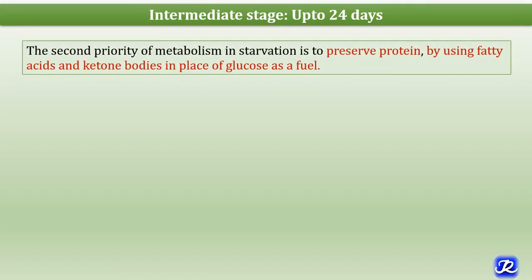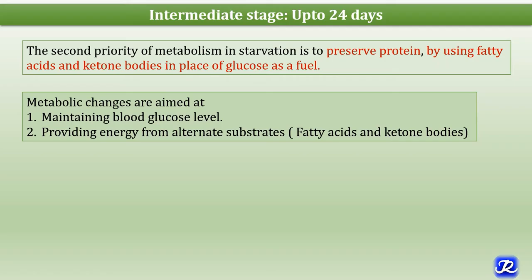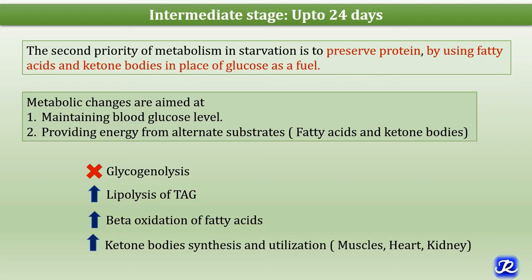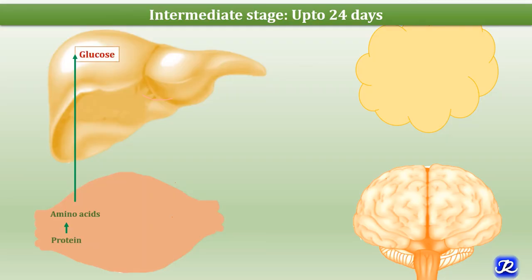In the intermediate stage, lasting from 48 hours (2 days) to 24 days, the priority of metabolism is to preserve protein by using fatty acids and ketone bodies in place of glucose as fuel. Metabolic changes aim to maintain blood glucose levels and provide energy from alternate sources. There is no glycogenolysis; instead, there is increased lipolysis, increased beta-oxidation of fatty acids, and increased ketone body synthesis and utilization by muscles, heart, and kidney. Conservation of body protein is achieved by decreased protein degradation and decreased gluconeogenesis compared to the early stage.